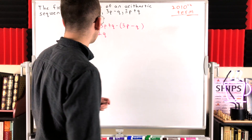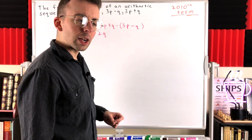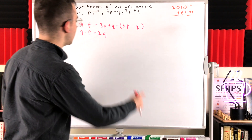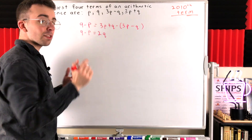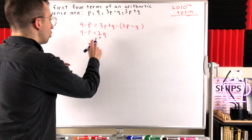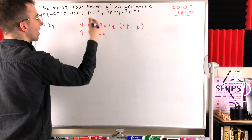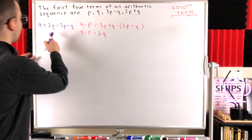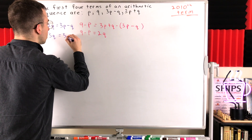Now we've got this equation in two variables P and Q, so we need another equation in order to solve for both variables. Remember, 2Q is an expression for the common difference between consecutive terms of this sequence. So if we add 2Q to 9, the second term of the sequence, that would give us the third term of the sequence, 3P minus Q. So: 9 plus 2Q equals 3P minus Q. Adding Q to both sides of this equation, we have that 9 plus 3Q is equal to 3P.